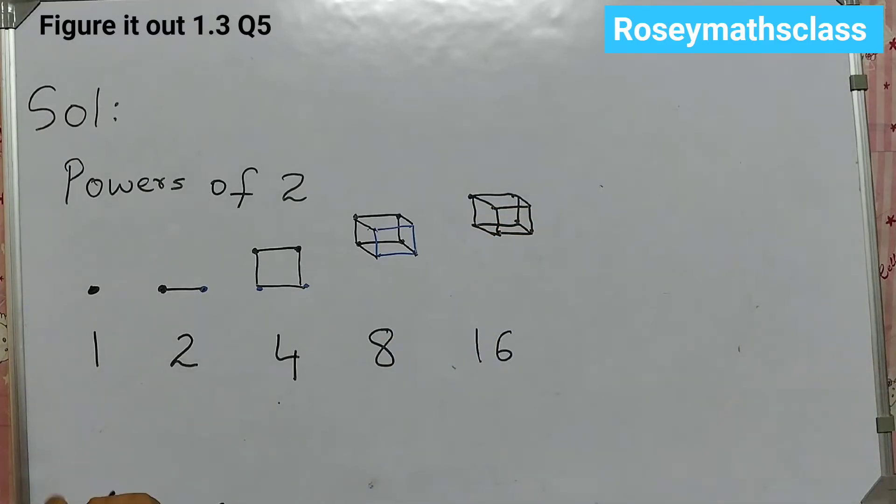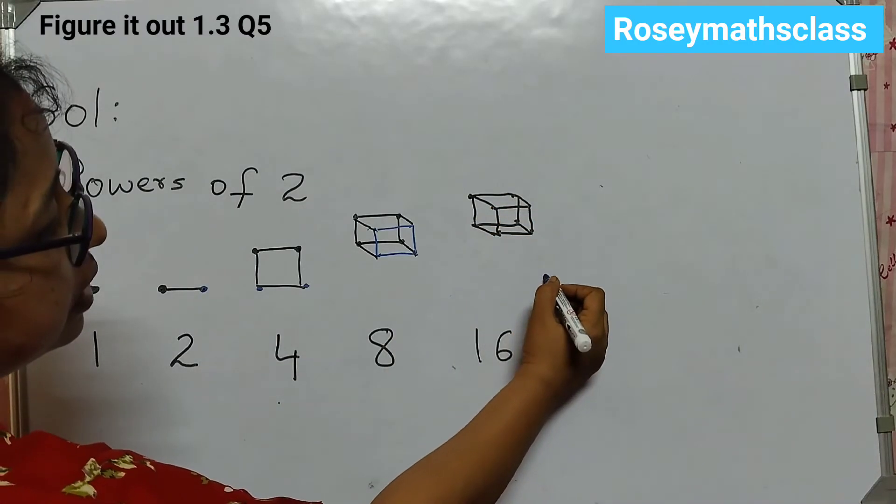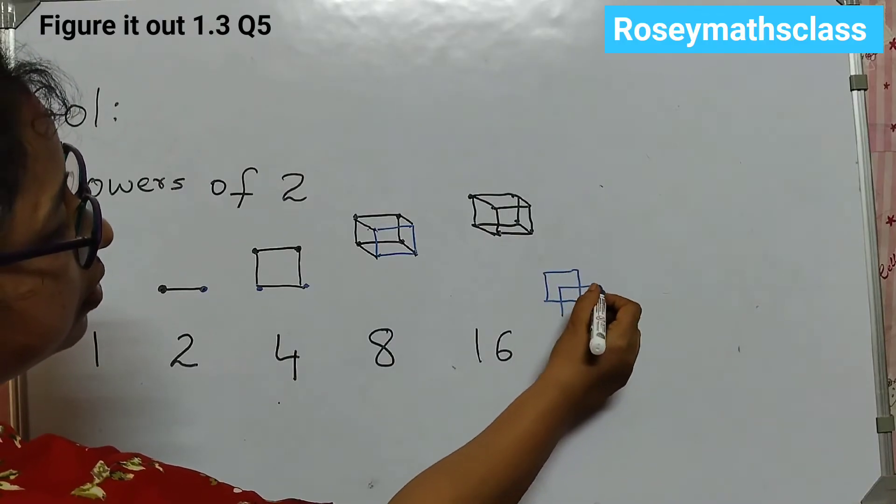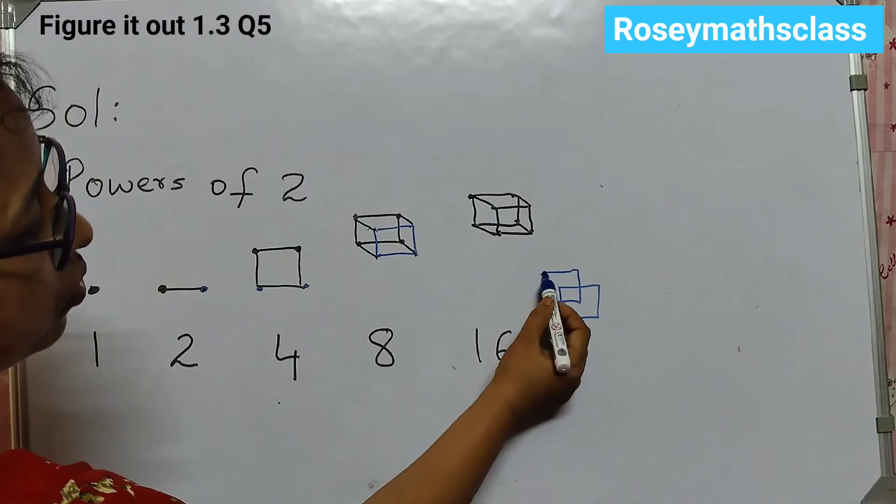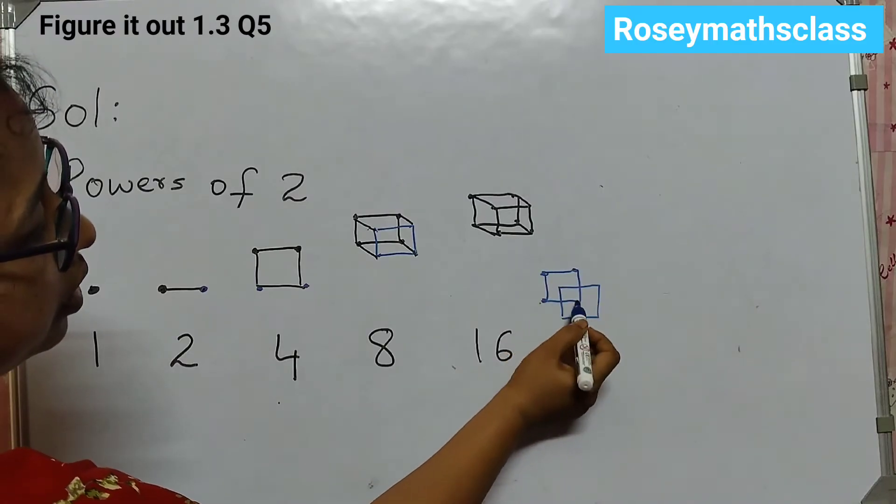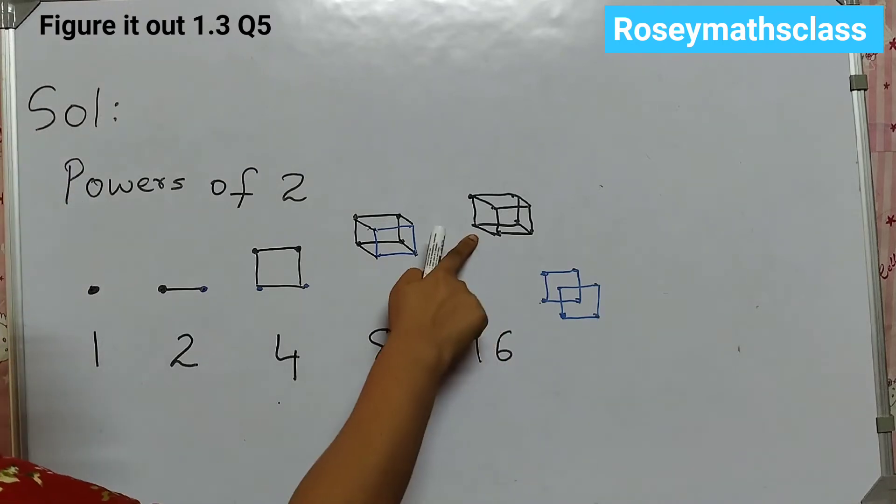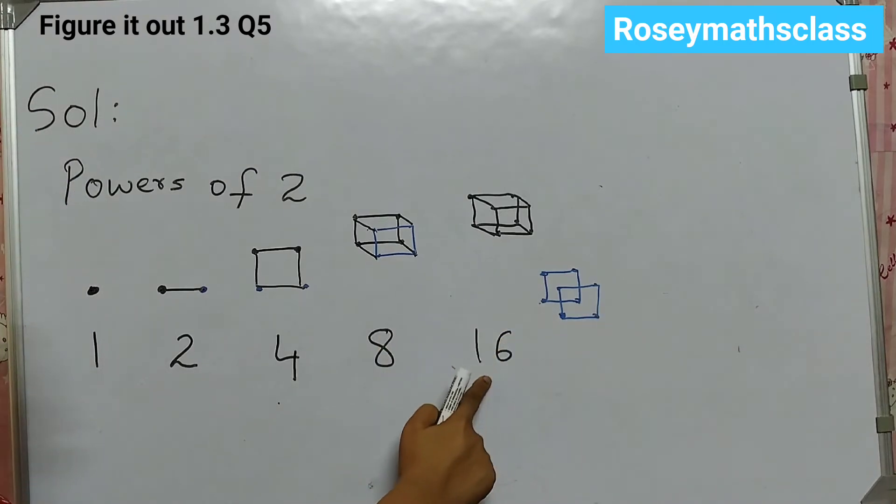This is 1. And the second one you can draw is here. Like this only. So here are the dots. 1, 2, 3, 4, 5, 6, 7, 8. So 8 dots plus 8. That is equal to 16.